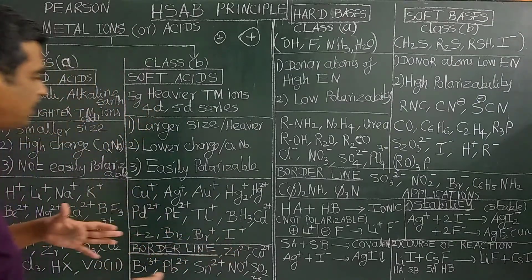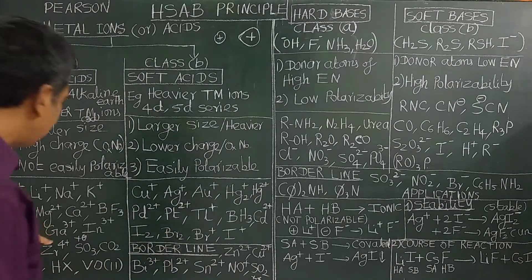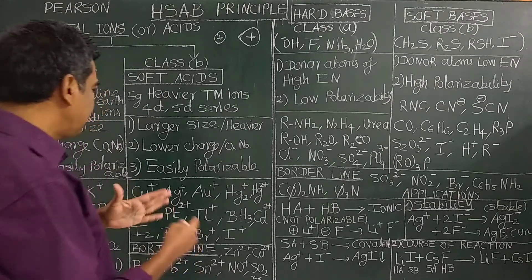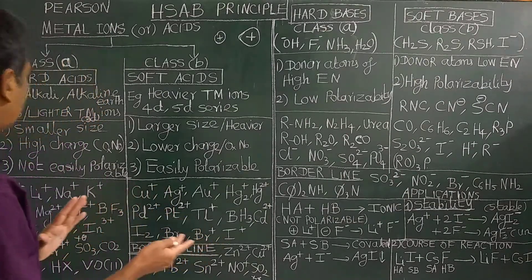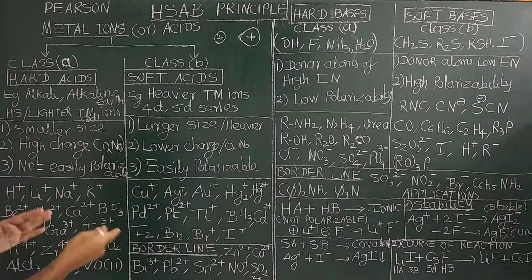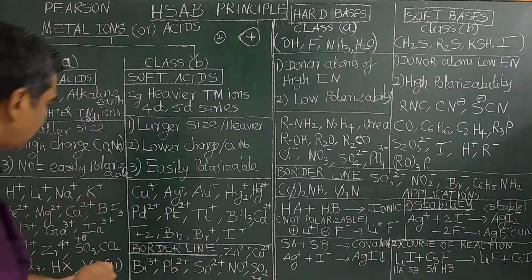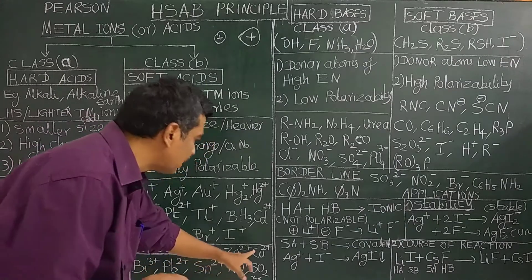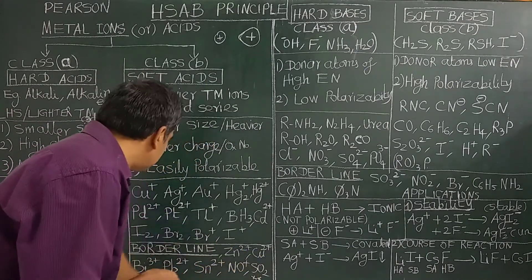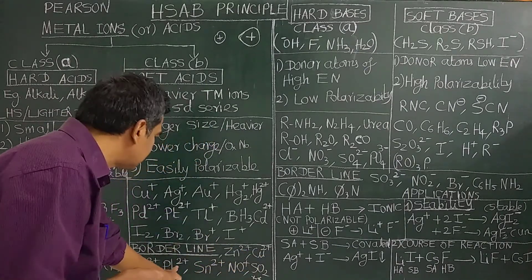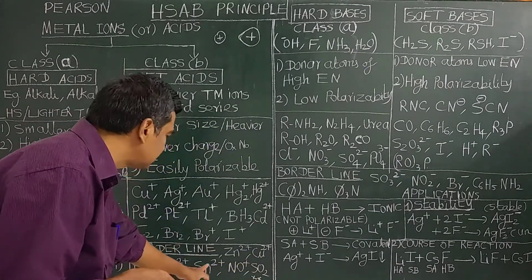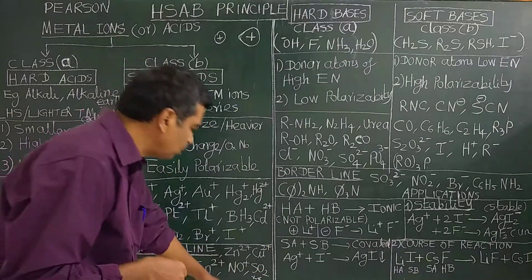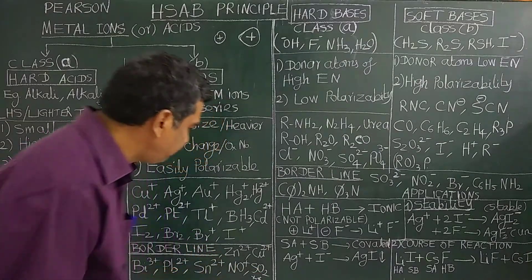Borderline acids are intermediate between hard acids and soft acids. Examples include: Zn2+, Cu2+, Fe2+, Rh2+, Sb3+, NO+, SO2, etc.